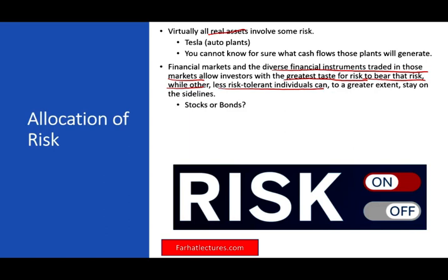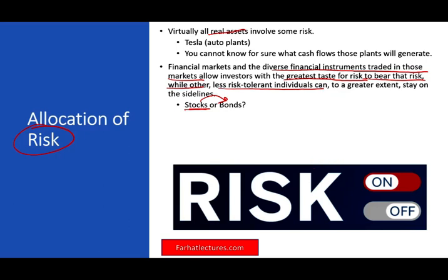For example, you can buy Tesla stocks, which are riskier than Tesla bonds. If you don't want to take a lot of risk, the financial market offers options: you can buy Tesla bonds for a safer investment, or avoid Tesla altogether and buy government securities, which are essentially 100% safe. The point is the financial market gives you that allocation of risk — from the highest risk level down to the lowest — depending on your investment and risk tolerance.